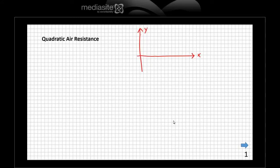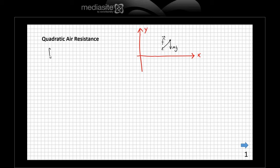Hello, this is Brian Washburn. I'd like to talk about quadratic air resistance in projectile motion and free fall. Last time we talked about linear air resistance, and this time I'd like to talk about quadratic air resistance specifically for projectile motion. For an object of mass M, we have a force of gravity Mg acting on it, and we also have our air resistive force opposite to the direction of velocity. For quadratic air resistance, the magnitude of that force is equal to C times V squared.